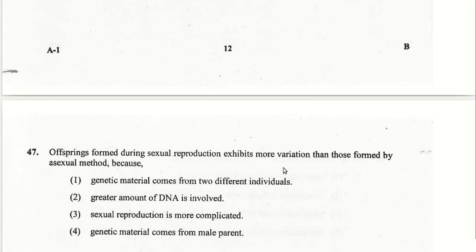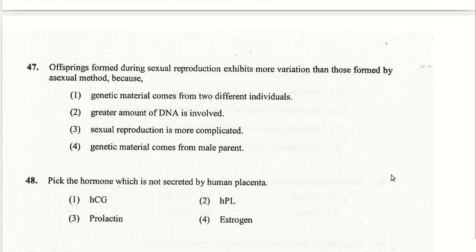Offspring formed during sexual reproduction exhibit more variations than those formed by asexual methods because genetic material comes from two different individuals. The hormone not secreted by the human placenta is prolactin.